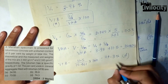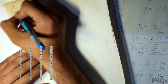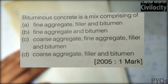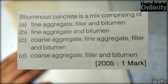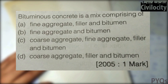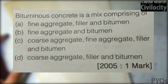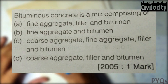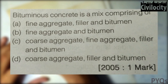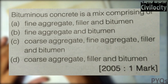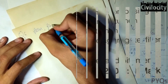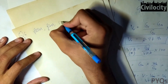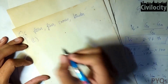Question six: bituminous concrete is a mix comprising of what? We know a bituminous mix consists of fillers, fines, coarse aggregates, and binder. So the correct answer is the third option, C.